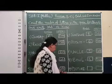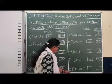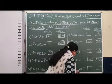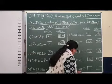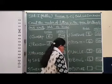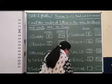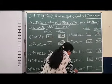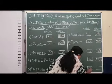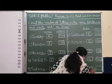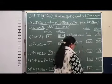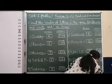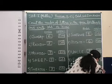Last one: P, I, C, T, U, R, E — Picture. How many letters are used here? One, two, three, four, five, six, seven. So seven is an odd number.